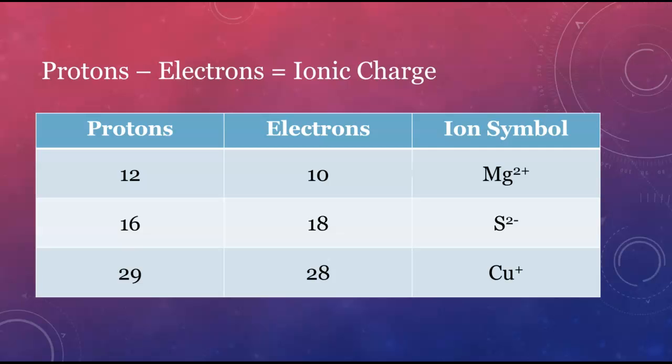Since electrons are negatively charged, an element that loses electrons becomes a positively charged cation. An element with more electrons than protons is a negatively charged anion.